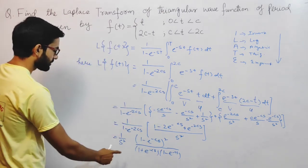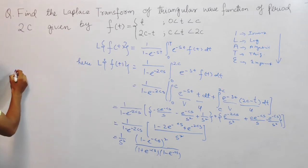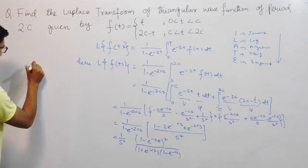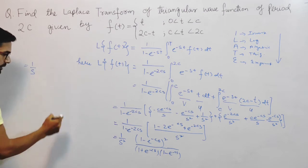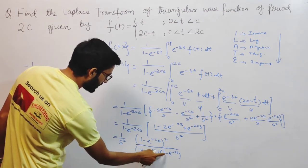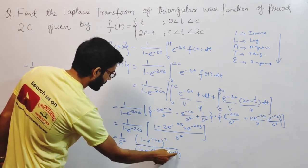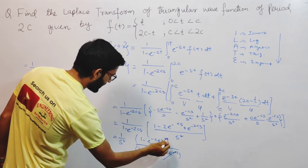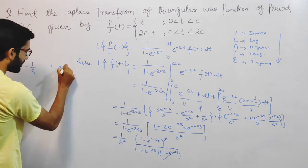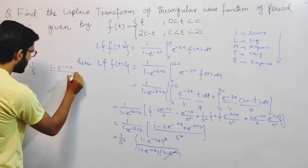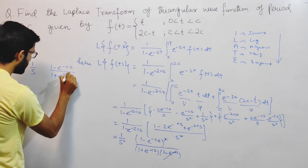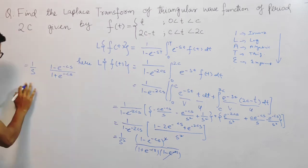One factor of (1 minus e^(-cs)) cancels between numerator and denominator, simplifying the expression to: 1/s² times (1 minus e^(-cs)) divided by (1 plus e^(-cs)).